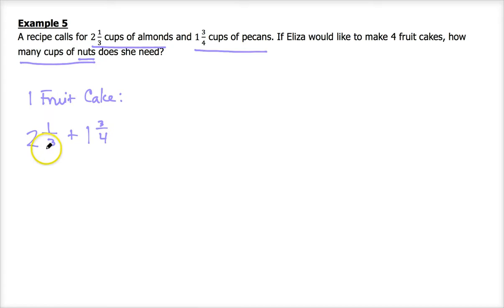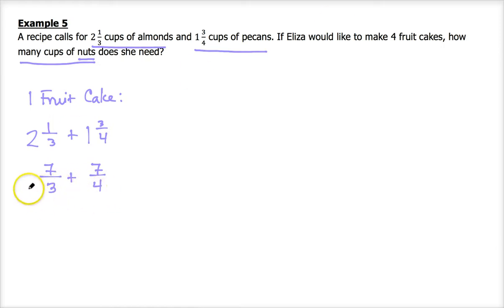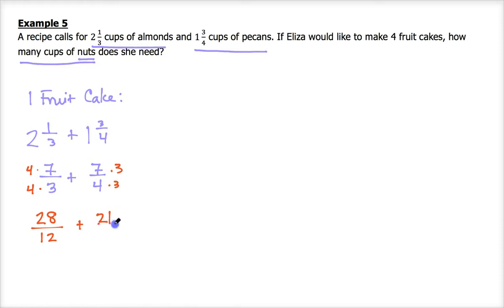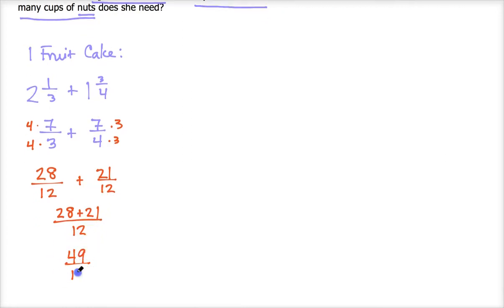We make these improper fractions: two and one third becomes seven thirds, and one and three fourths becomes seven fourths. When adding, remember we need common denominators. The LCM of three and four is twelve, so seven thirds becomes 28 twelfths and seven fourths becomes 21 twelfths. 28 plus 21 over 12 gives us the improper fraction 49 twelfths — the total cups of nuts needed for one fruit cake.